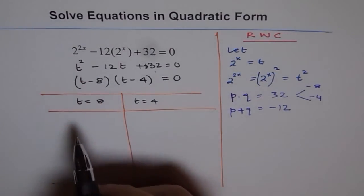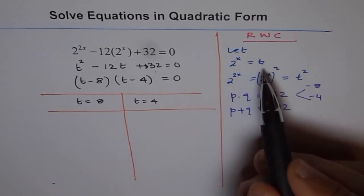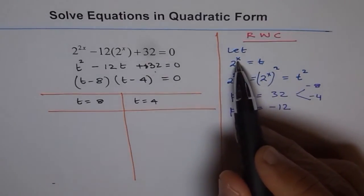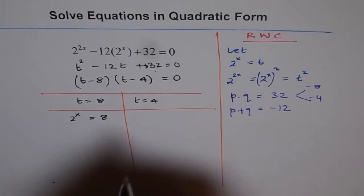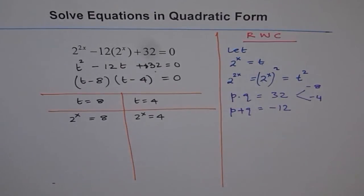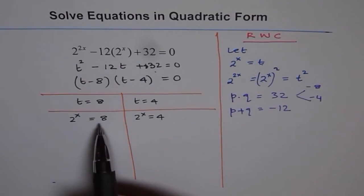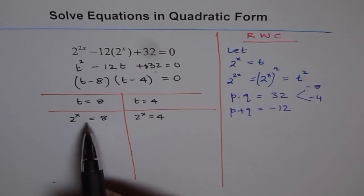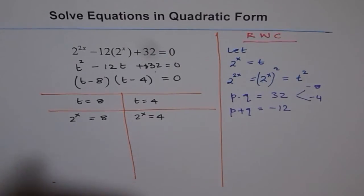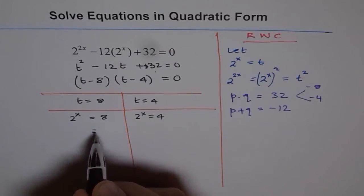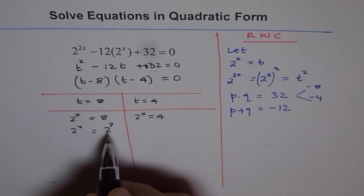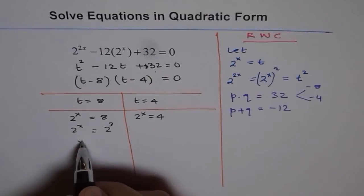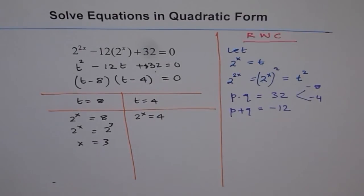But well, we want what x is. We can go back to our substitution and resubstitute or back substitute. t is 2 to the power of x. So instead of t, I am going to write 2 to the power of x equals 8. Now, how to find x from here? Well, we can write 8 as a base of 2. 8 is 2 to the power of 3. And 2 to the power of x equals 2 to the power of 3. 2 times 2 times 2 is 8. So that means x equals 3. So that gives us a solution as x equals 3.